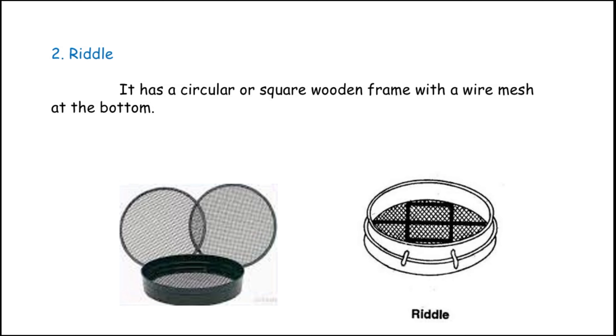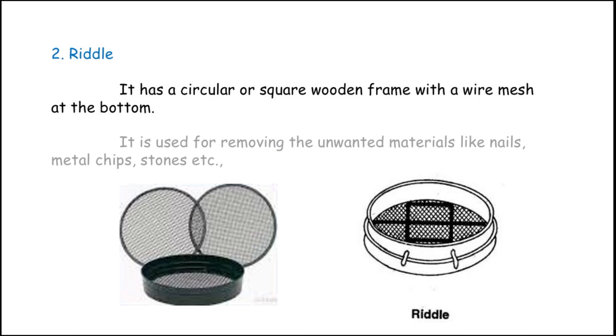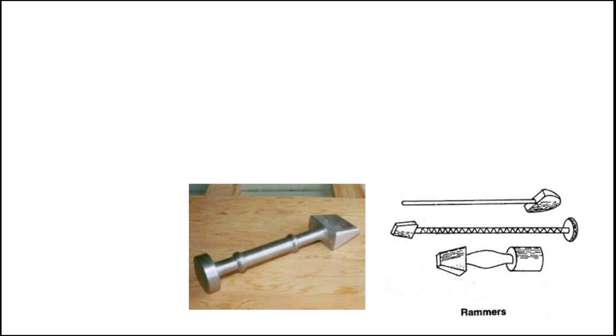The next one is the riddle. It has a circular or square wooden frame with a wire mesh at the bottom. It is used to remove unwanted materials like nails, metal chips, stones, etc. from the molding sand.